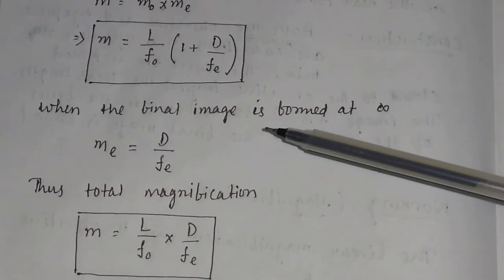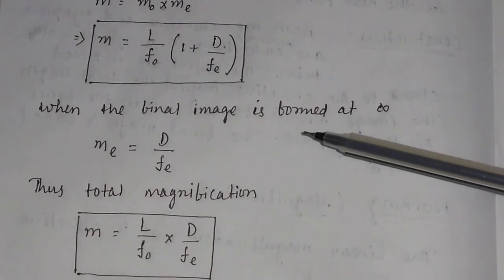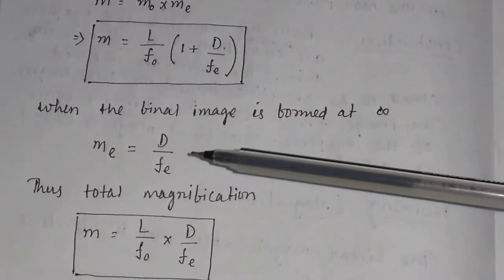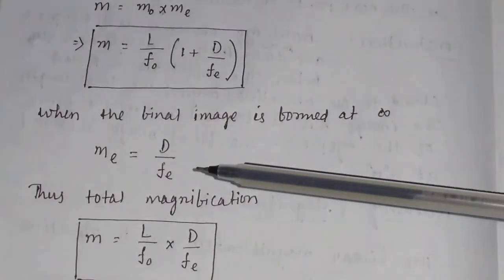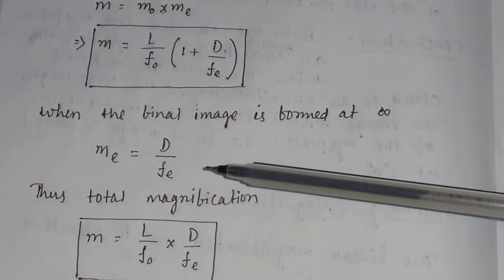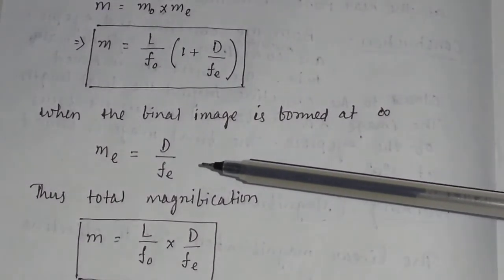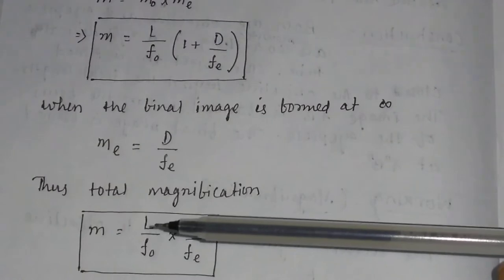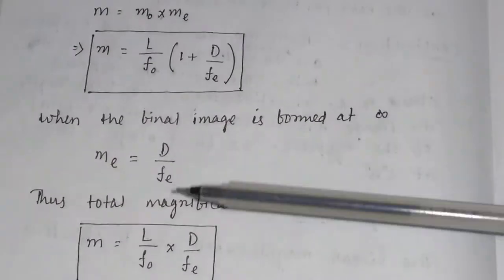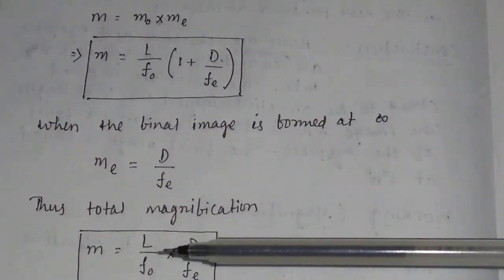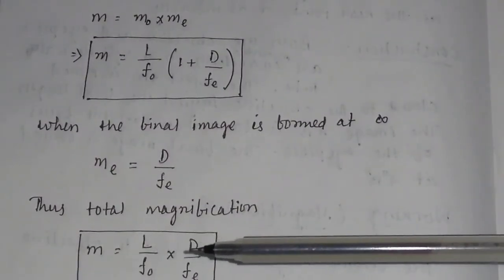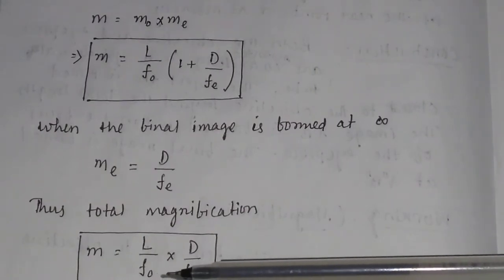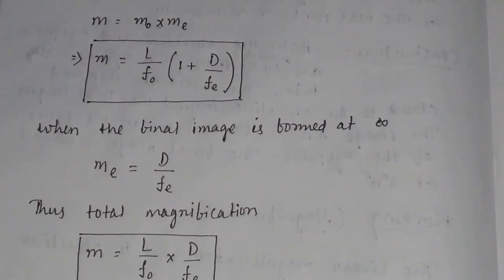When the final image is formed at infinity, ME equals D/FE. This is derived from the simple microscope formula. Thus the total magnification in this case is M = M0 × ME = (L/F0) × (D/FE).